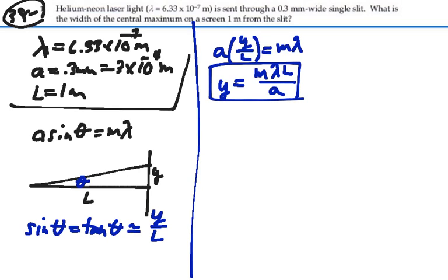Now we want to find the width of the central maximum. The central maximum is going to be between the first minima on either side. So if we can find the distance to the first minima, then twice that distance would be equal to the width of the central maxima.